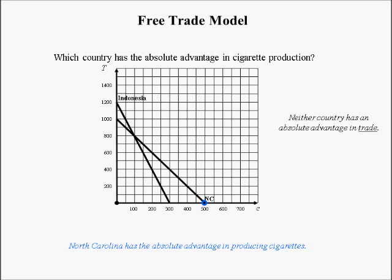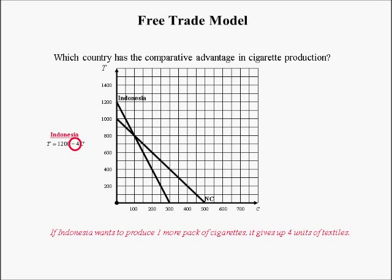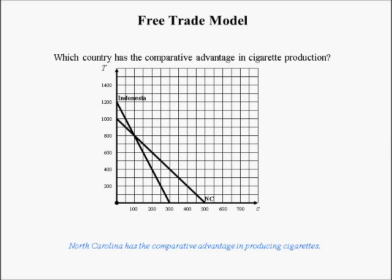Which country has the comparative advantage in cigarette production? We look at the slope of each PPF. Indonesia's slope says: to produce one more pack of cigarettes, it gives up four units of textiles. North Carolina's slope says: to produce one more pack of cigarettes, it gives up only two units of textiles. Cigarette production is cheaper in North Carolina because they give up less. Therefore, North Carolina has the comparative advantage in cigarette production — and by implication, Indonesia has the comparative advantage in textiles.